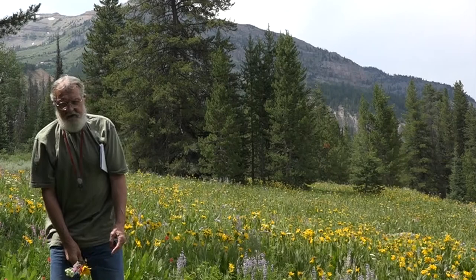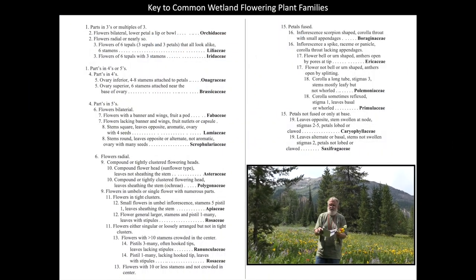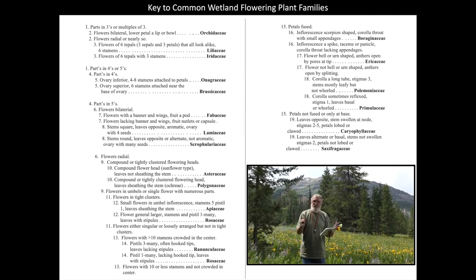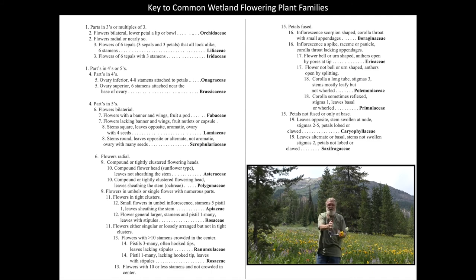With those six basic features, you can run this key. This one has something like 16 or 18 families, and you can just work your way down using: can I count three, four, or five? Is the ovary above or below? Is the flower symmetrical in a radius, or is it bilateral and I can only cut it one way?